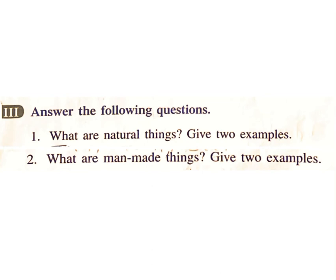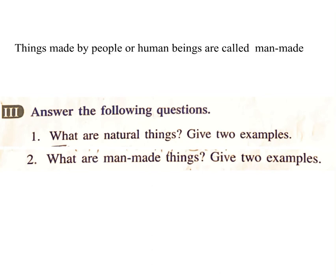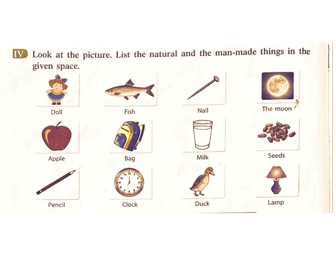2. What are man-made things? Give two examples. Answer: Things made by people or human beings are called man-made things. Examples: books, toys, clothes, ball, bat, doll.